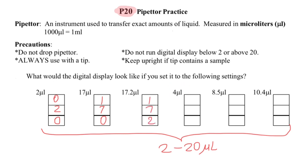4 microliters would be 4 and 0 here. 8.5 microliters is going to be 8 and 5 here. And 10.4 is going to be 1, 0, and 4 here.